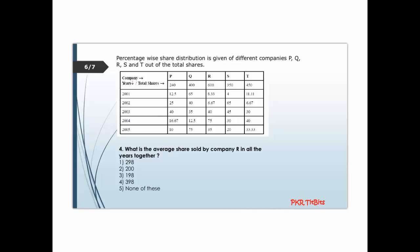Since 600 is common for company R across all years, we can directly add all the percentages for R and then find the average. Adding all the R percentages across 2001 to 2005, the running total gives us a sum of 165, and with a carry of 2 the final sum is around 165. Dividing by 5 gives 33 percent.